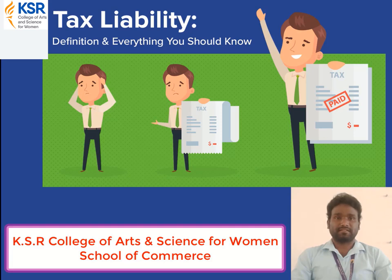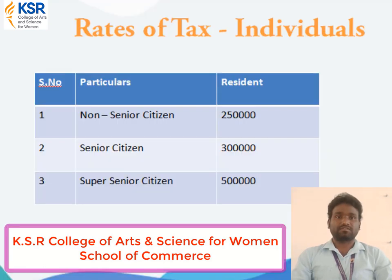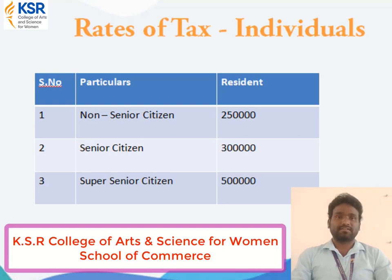What are the elements? There are totally three elements. One is income tax for individuals, then surcharge, and the last one is education cess. Now first we will see income tax for individuals. The government has decided three categories: non-senior citizen, who is below 60 years of age; senior citizen, who is above 60 but below 80; and super senior citizen, who is above 80.